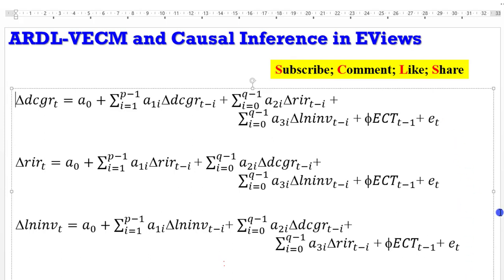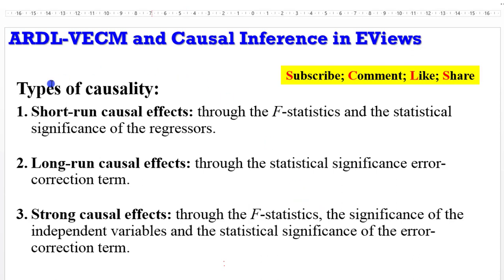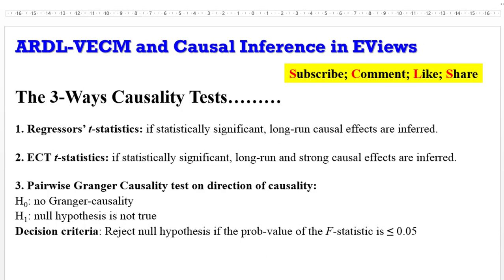We are going to estimate three different equations and establish whether there is cointegration or not. The three ways causality test I'll be putting you through: how to infer long run causal effects from the regressor t-statistics, how to infer long run and strong causal effects from the error correction term statistics, and also to determine pairwise Granger causality, which tells you the direction of causality. The decision criteria will be to reject the null hypothesis if the p-value of the F-statistic is below 0.05.